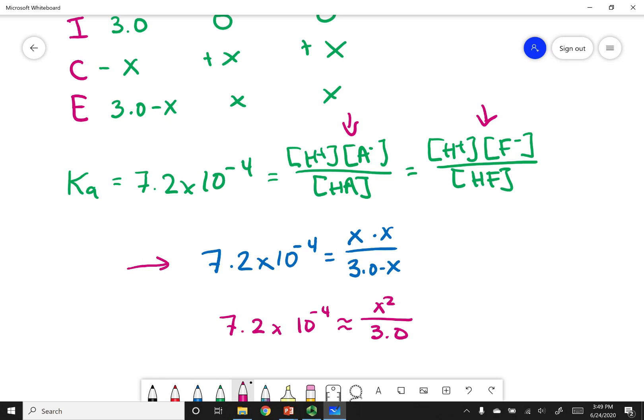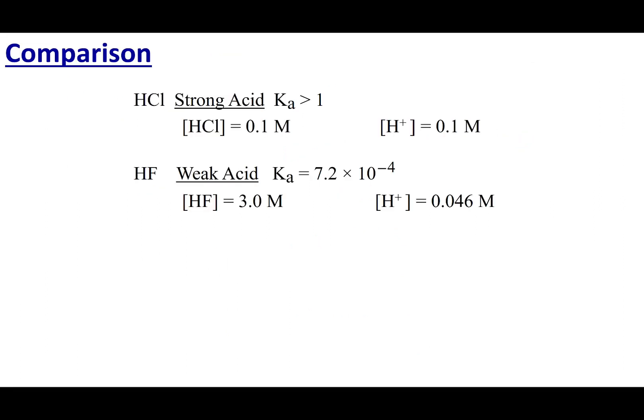I'm going to simplify this equation. 7.2 times 10 to the negative 4 equals X times X, which is X squared. And I'm going to say that X is negligible, so 3.0 minus X is about 3.0. This makes the problem way easier to solve. What I get is a value that X equals 0.0465. We can see that this is indeed a tiny number - less than 5% of 3, so my assumption was valid. Now remember what X is. X is the H-plus concentration. It's also the F-minus concentration in this particular problem, but H-plus is what I was going after.